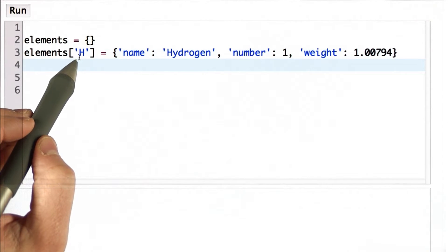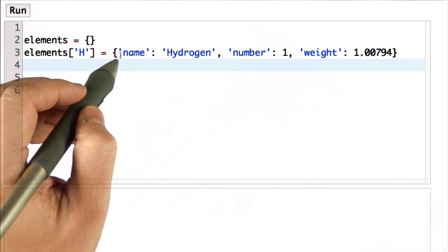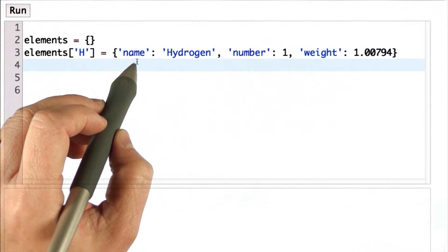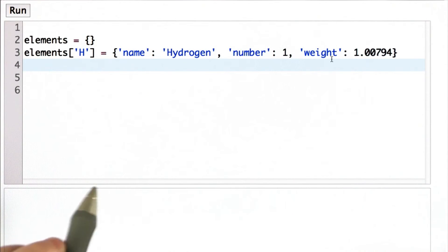The key is the single letter H. And it has as its value a dictionary that has three entries with the keys name, number, and weight, and values associated with each of those. That could be different types. Name is a string which gives the full name of the element.